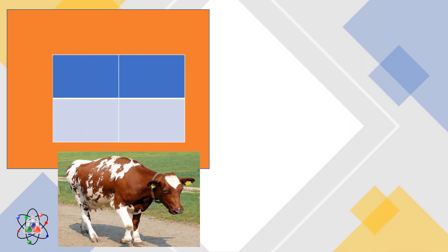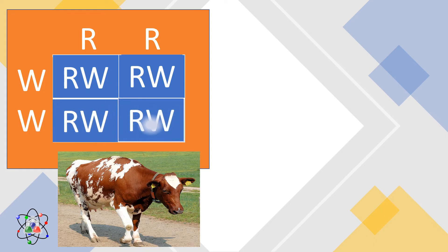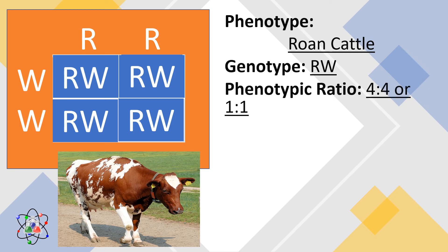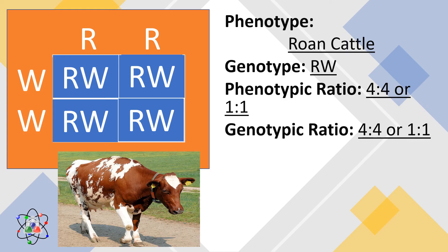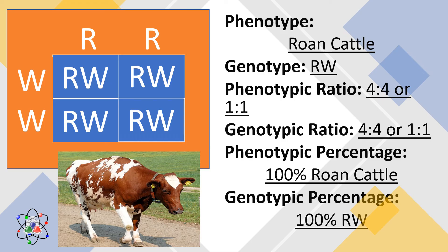By using this Punnett square, let us cross the red-haired cattle represented by Rr to a white-haired cattle, Ww. By multiplying the alleles, the resulting offspring will all be Rw. The phenotype of the offspring is a roan cattle. Genotype: Rw. Phenotypic ratio: 4 to 4, or 1 to 1, since they are all roan. Genotype ratio: 1 to 1, since it is all Rw. Phenotypic percentage: 100% roan cattle. Genotypic percentage: 100% Rw.